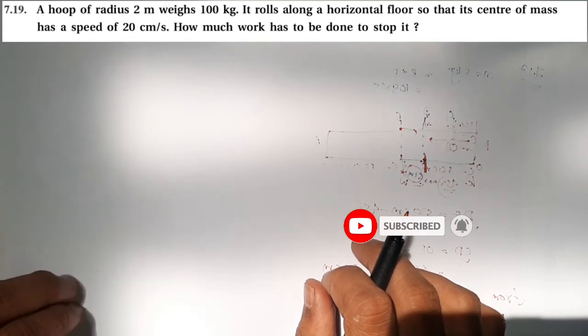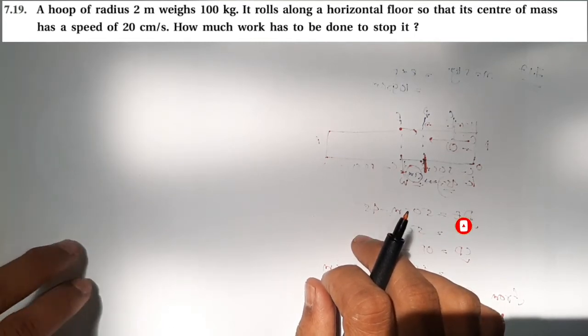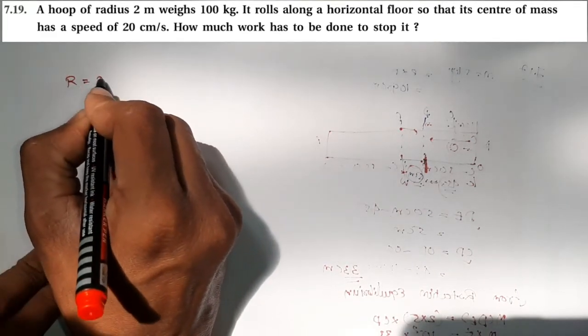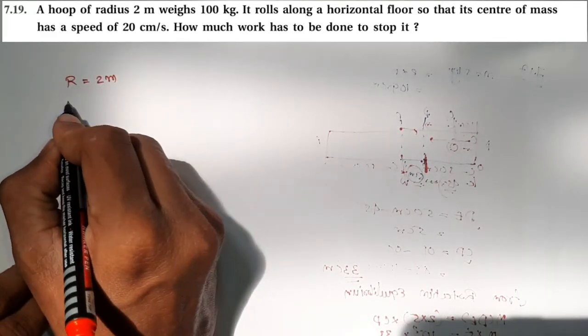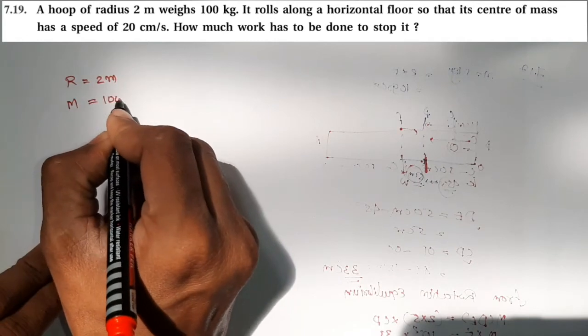First we define the variables: r equals 2 meters, m equals 100 kg.